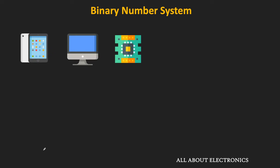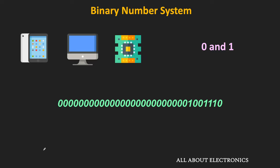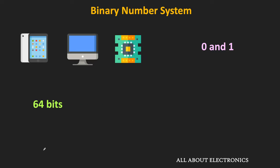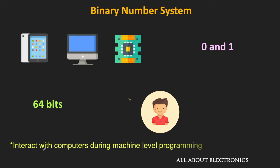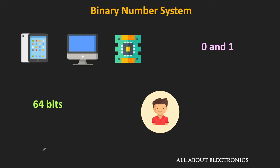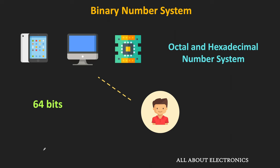As you know, computers and digital circuits work on the binary number system, which consists of only 1s and 0s. These binary numbers typically require 3 to 4 times more digits than decimal numbers, so the computer works on very large binary numbers — even 64-bit binary numbers are common today. These numbers could be numerical data, memory locations, or instruction codes, and dealing with such large binary numbers becomes very difficult for a human operator. In such cases, the octal and hexadecimal number systems are very useful.